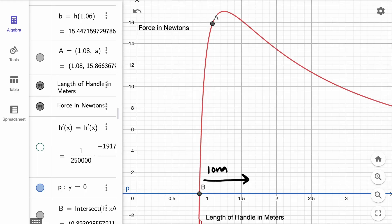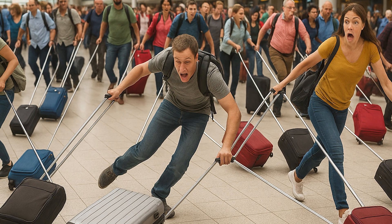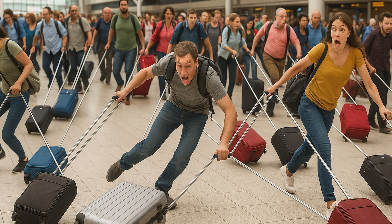Lengthening the handle helps, but past 1.25 meters the force decreases more slowly. At 3 meters, maybe around 10 feet, it's not even cut in half, but the strain does drop. The cost here is that such long handles might cause chaos with hundreds of people walking through airports.